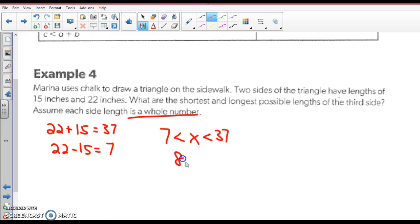But it says whole number. So our whole number would be 8, 9, 10, dot dot dot, all the way up to 36. So the greatest would be 36 and the least would be 8. And if you did this for decimals, you could never write it wrong because it could be 7.1 or 7.01 or 7.001.